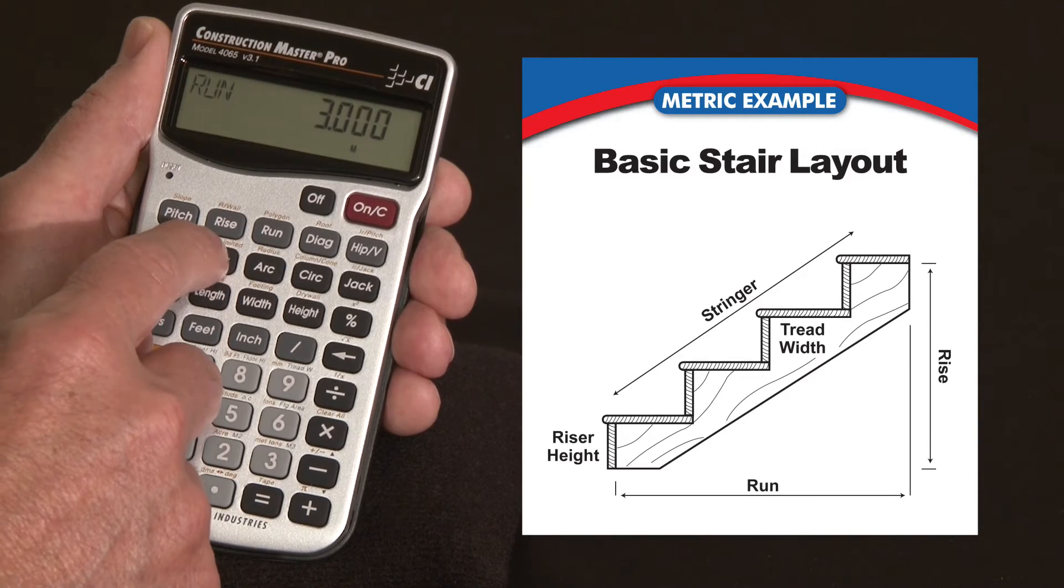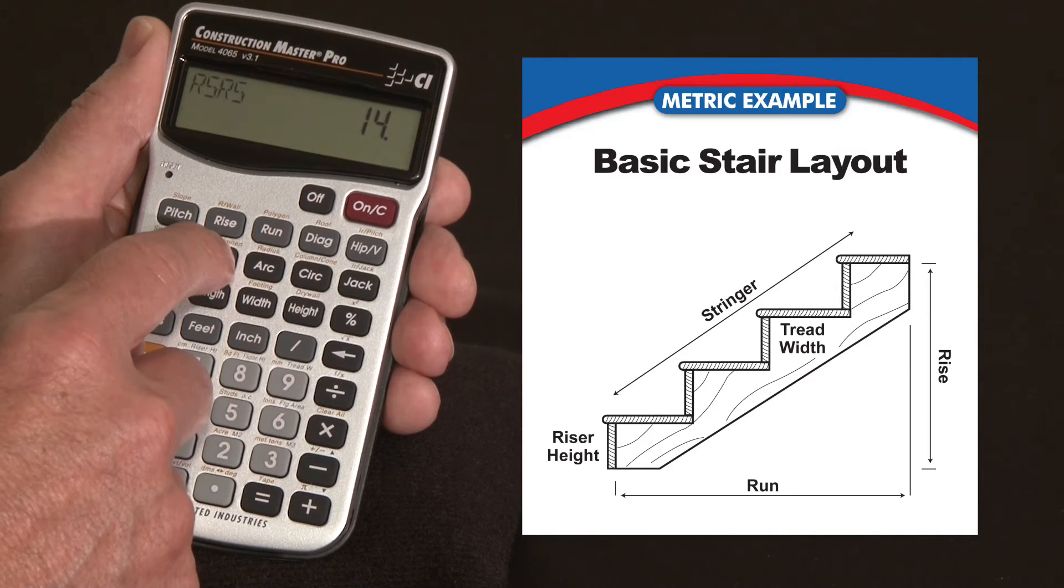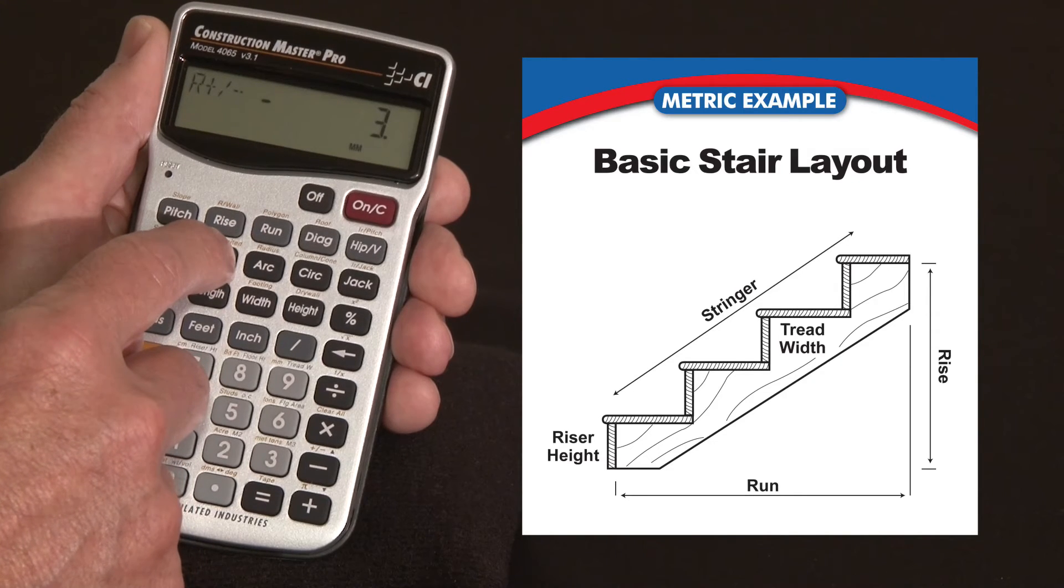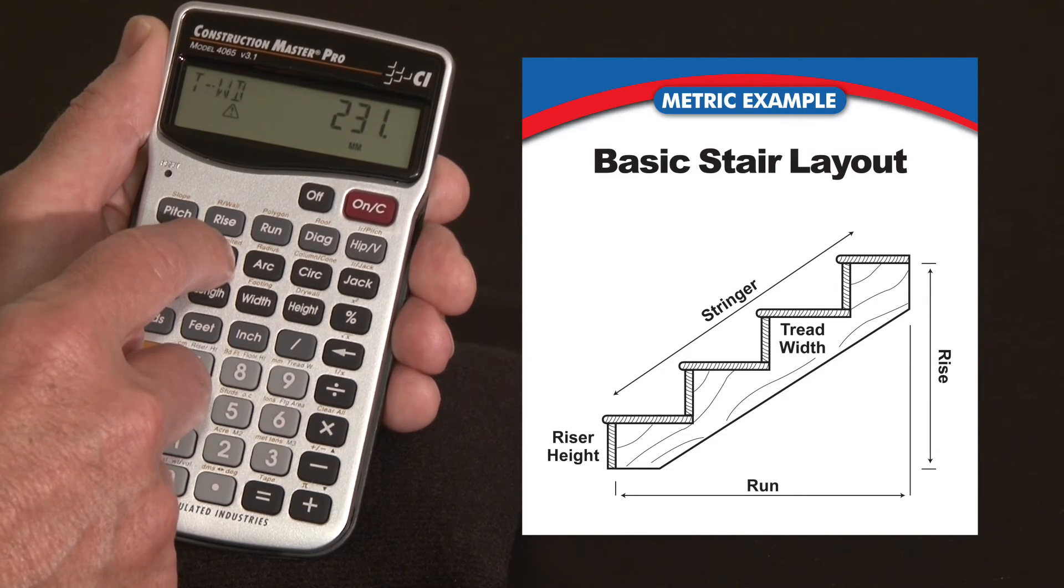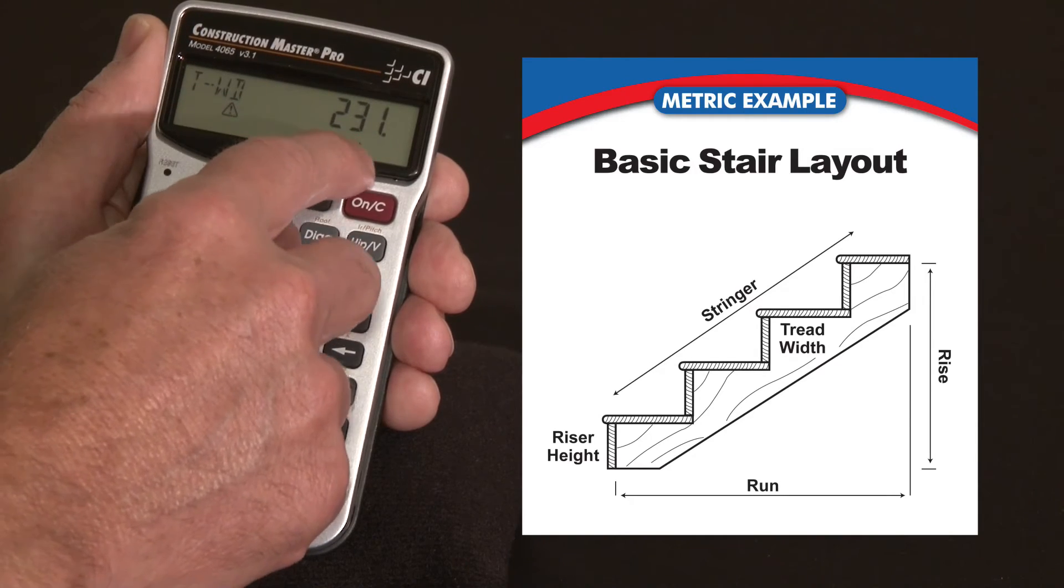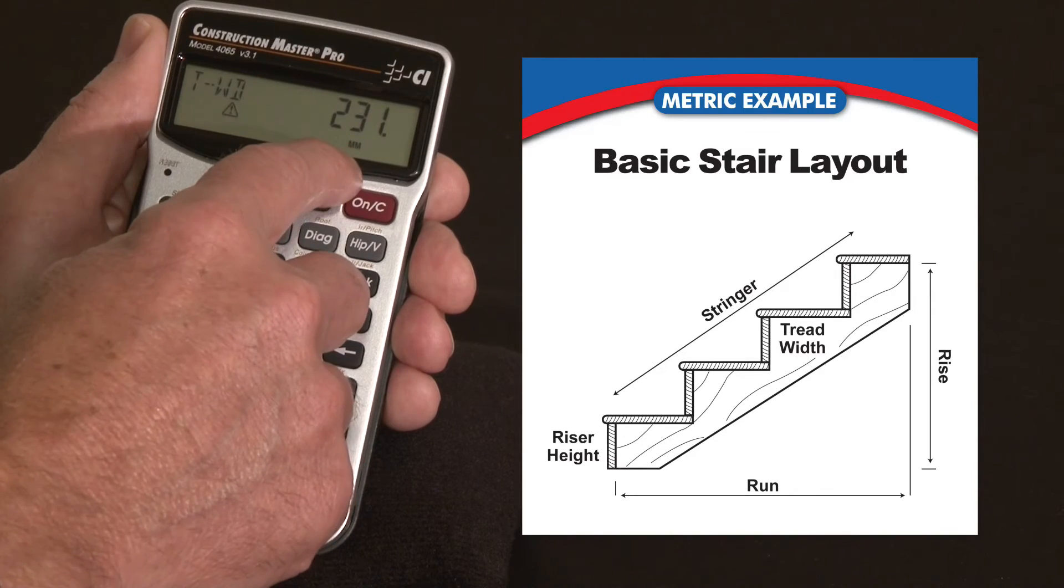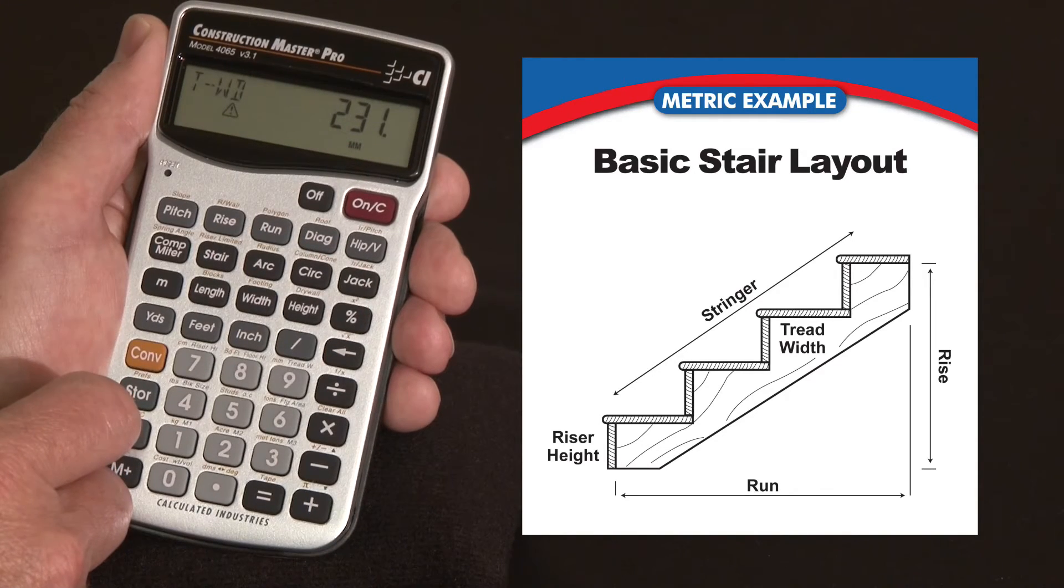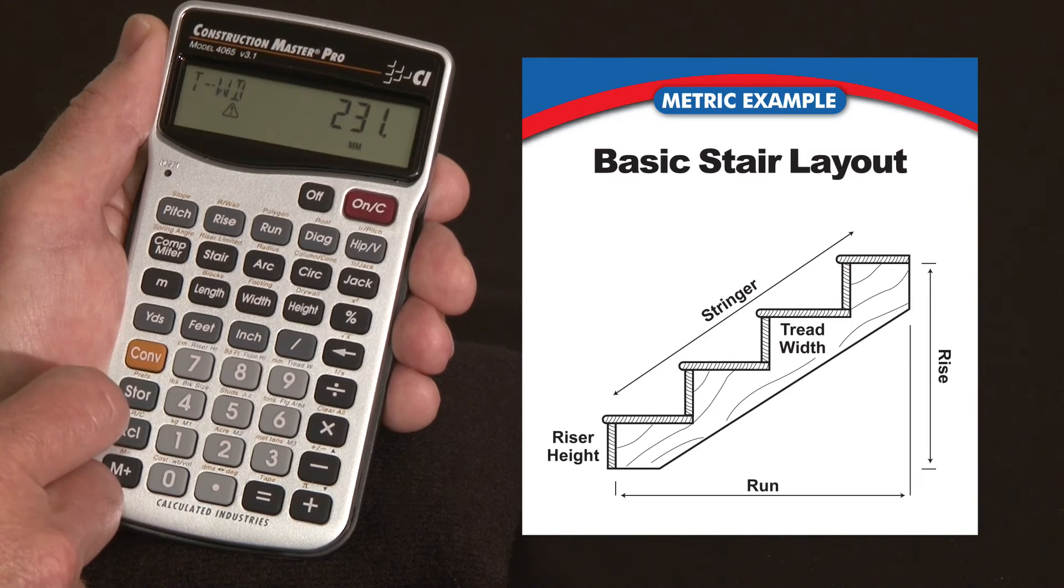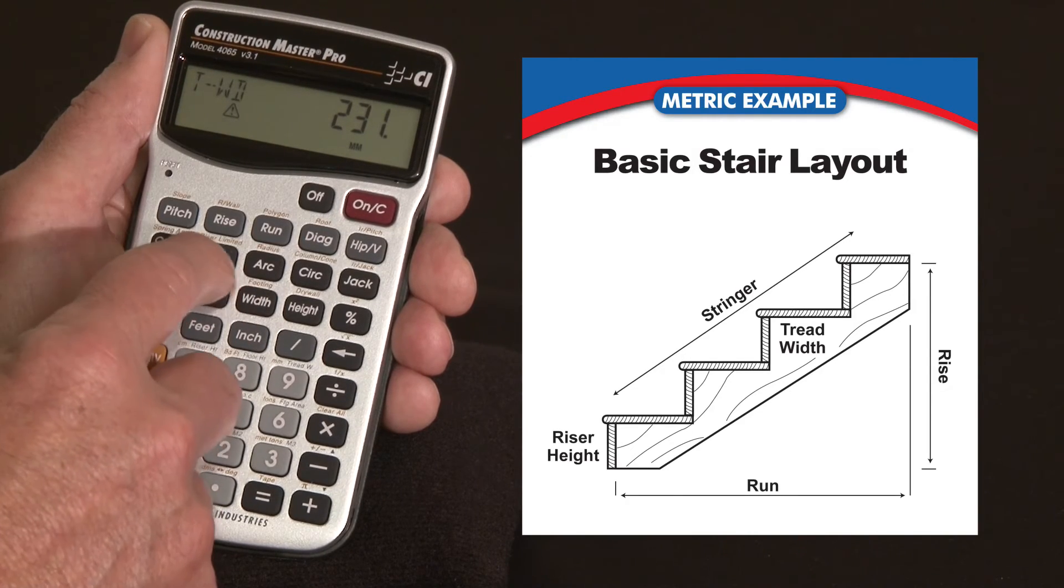So now I go back through this sequence of the stair key. Still says 203mm for my riser height. Still has 14 risers. Still has the adjustment of that 3mm. The next press is tread width, and it has the little alert flag up there, and it says to make this come out evenly within that 3 meters we've got to work with, the tread width is now going to be 231mm, which is less than your target 240. So we look at that and we say okay, I think we're okay with that. We're just going to go on.